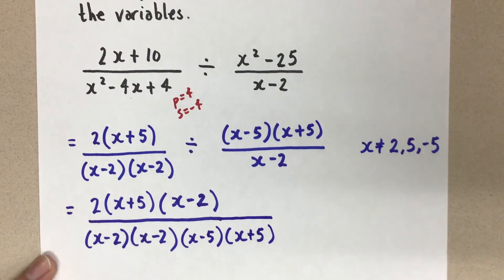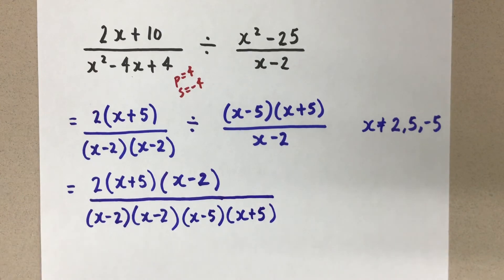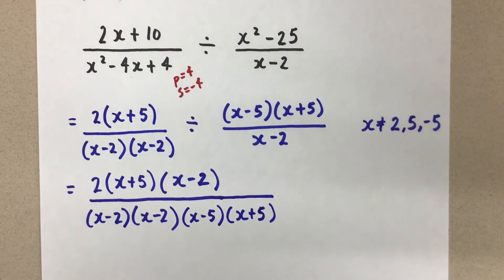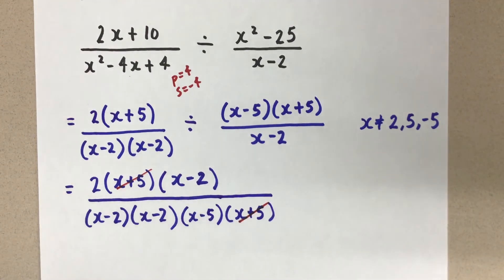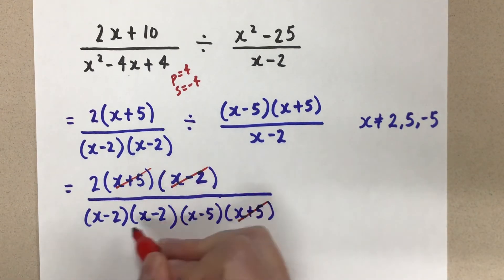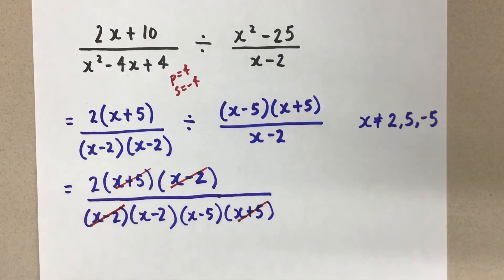Okay, there it is. Now we need to simplify. So let's take a look and see if we have any common factors in the numerator and the denominator. And we do. I have an x plus 5 and an x plus 5, and so those divide out. They make 1, and so they go away. And then again, x minus 2 and x minus 2, we can divide those. Again, we get a 1 there.